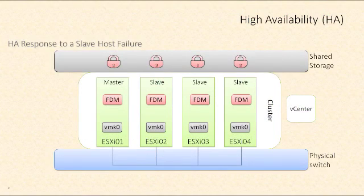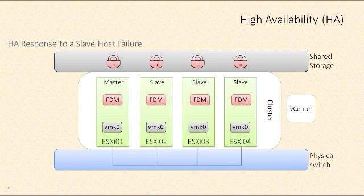A high availability cluster includes master hosts and slave hosts. Let's take a look at what happens when one of those slave hosts fails. We're not talking about simply a management isolation or some kind of network isolation event — we're talking about a true failure of that ESXi host.